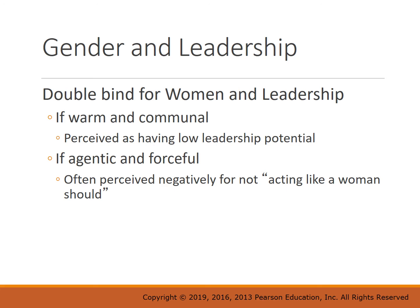This double bind creates a no-win situation: if women are warm and communal, they have lower perceived leadership potential; if they are agentic and forceful, they are often perceived negatively for not acting like a woman should. In 2016, only 21% of Fortune 500 CEOs were women, and boards of directors of US companies included only 15% women. Hillary Clinton in 2016 experienced this double bind — perceived negatively because of her agentic qualities of being competitive and aggressive.